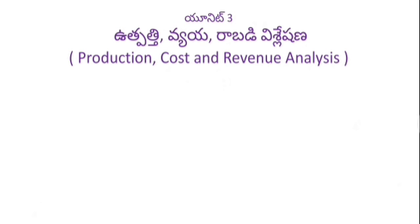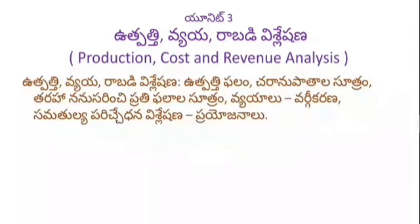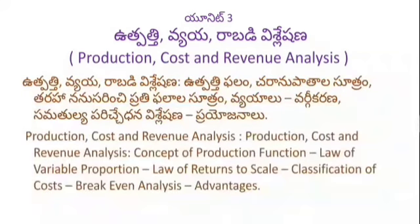Unit 3: Utpathee Viyaya Rabadi Visileshna — Production, Cost and Revenue Analysis. Topics include: Production Function (Utpathifalam), Law of Variable Proportions (Charanupathalasutram), Returns to Scale (Tarahanunasaranchi Prathifalalasutram), Costs and their Classification (Viyayaalu Vargikarana), Break-even Analysis (Samathaulye Parichetana Visileshna), and Revenue concepts.